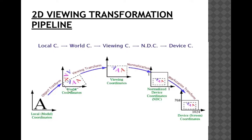This flowchart represents all of that: we start with world coordinates, then a viewing transformation gives us the window and viewport, which is then converted to normalized device coordinates. After that, the workstation transformation is done to produce the final output.